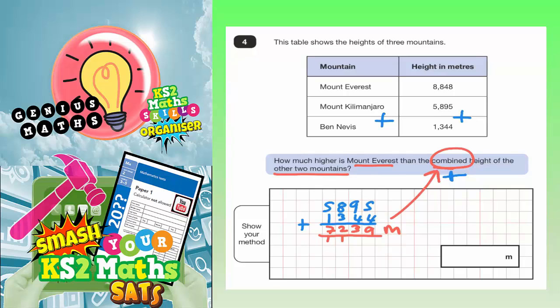We need to figure out how much higher Mount Everest is than 7,239. So how much higher, we're going to need to find the difference between the height of Mount Everest, which is 8,848, and this 7,239 that we've just found here. OK, so we're going to find the difference between those two numbers.